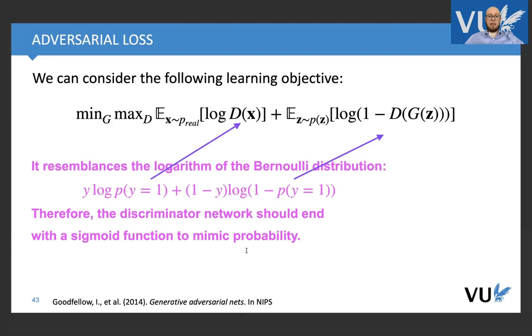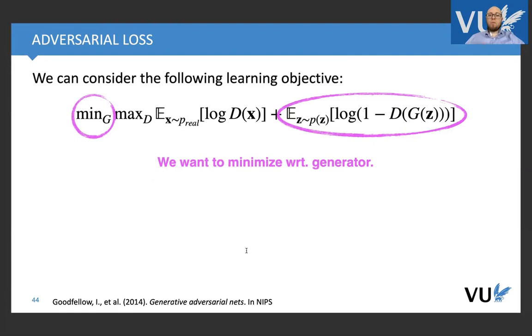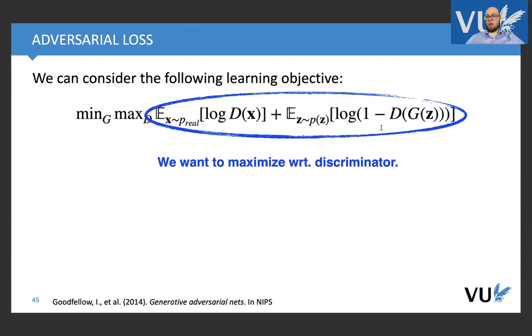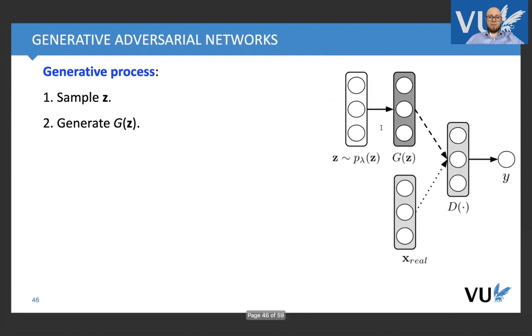This is the objective function. It is worth mentioning that the discriminator, since it models probability, in this case of being fake or real, should end with the sigmoid function to mimic it properly. We want to minimize with respect to the generator, because we have this minus here, so it must be the minimum. And we want to maximize with respect to discriminator, because it's equivalent to maximizing log likelihood function.